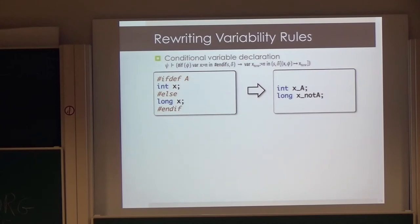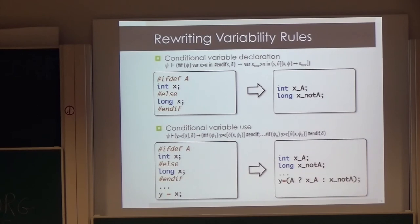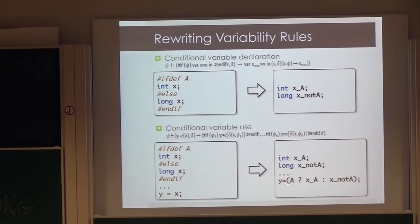You might ask: how about the uses? We also have a rule called conditional variable usage. Taking the same program as before, if we add an assignment Y = X, we rewrite it like this: we test for A — A is declared globally — so if A is true, we access x_A; otherwise we access x_notA. That's the idea of the transformation.